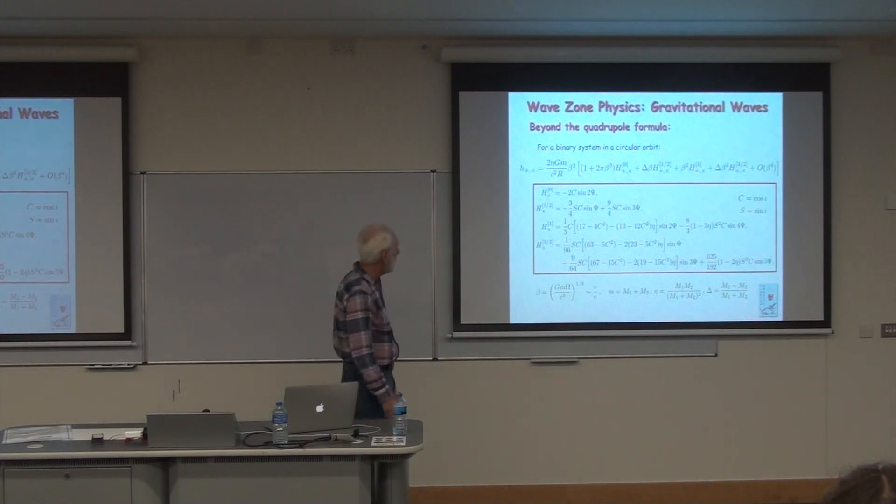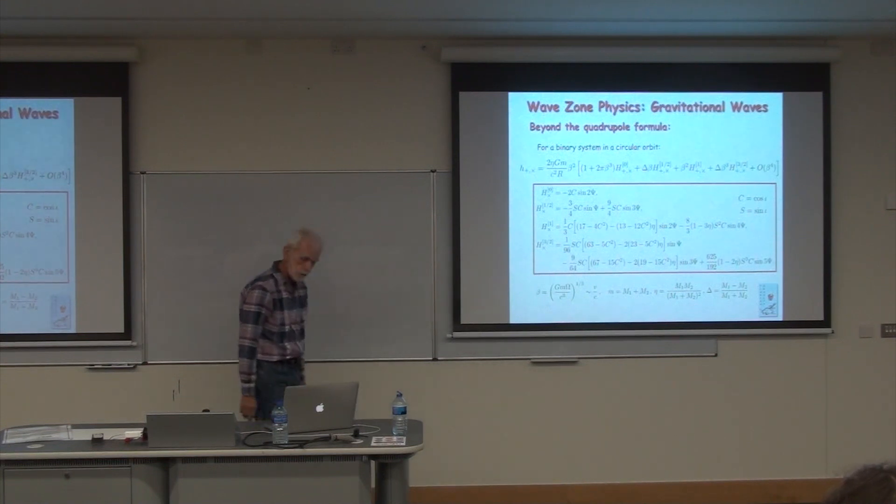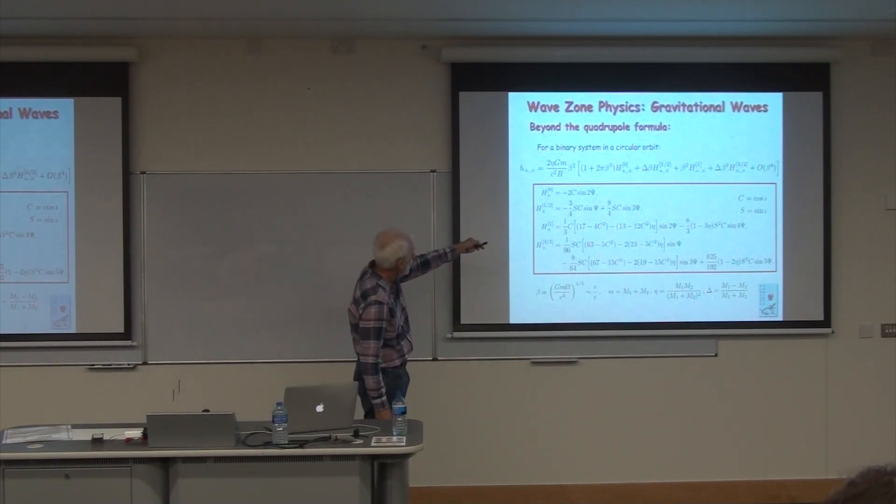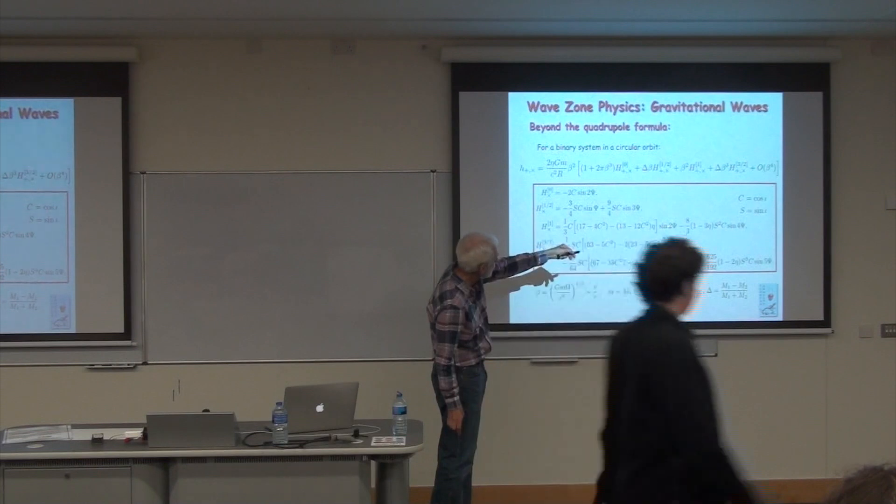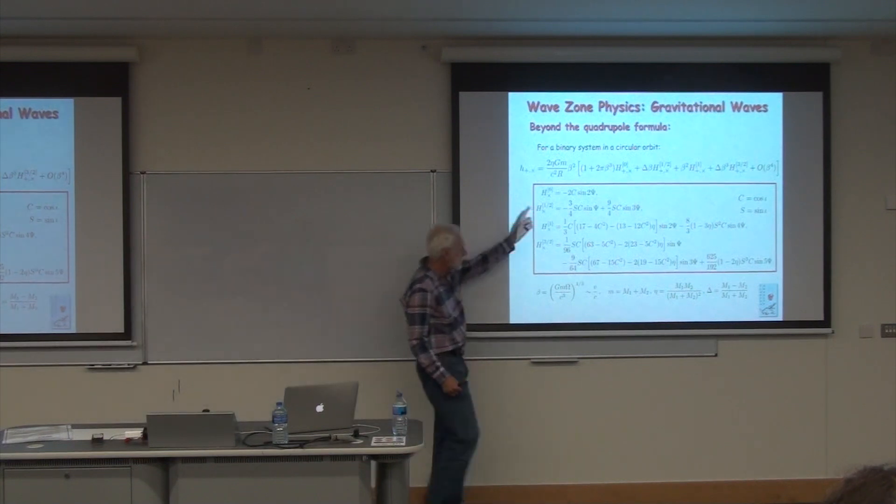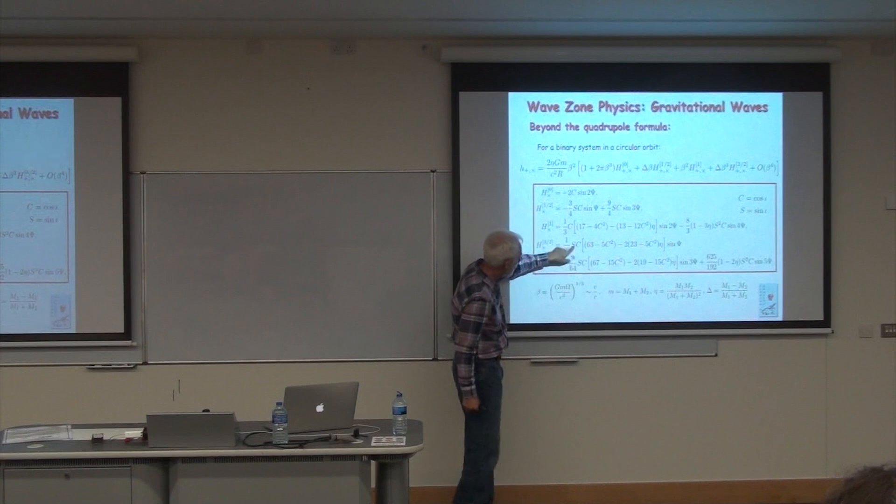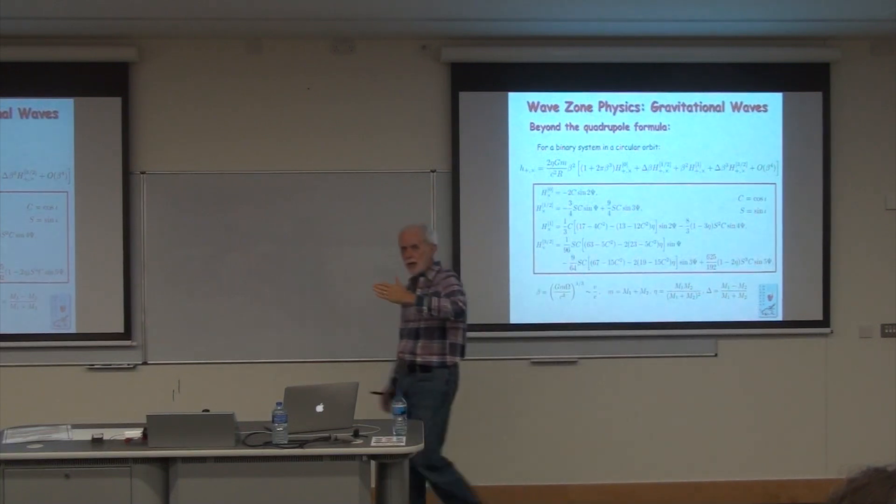You can keep going to higher and higher order. For a binary system, a circular binary system, I've shown the cross components. There's the quadrupole component. Notice the frequency of the waves is twice the orbital phase. At one-half pn order, there are sidebands of psi and three-psi. At one pn order, you get other sidebands of two-psi itself and four-psi. At higher orders, you get different frequency components of the gravitational wave signal and different angular dependences.